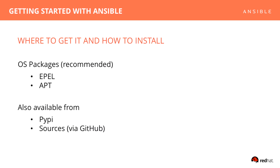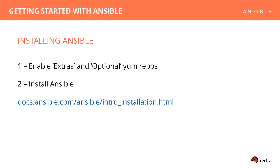Ansible is available from several places. While we recommend getting started with the OS-specific packages we provide via ePel and apt, you can also grab Ansible and its requirements from PyPI or direct GitHub source clone. Installing Ansible is pretty straightforward too. Note that if you're on a RHEL or equivalent system, you'll need to enable your extras and optional yum repos before attempting to install Ansible from ePel. The docs do a great job of detailing all the steps for you, but let's go ahead and show you what it looks like.